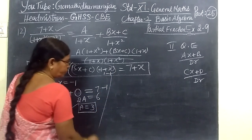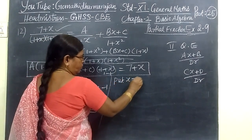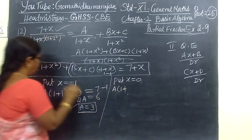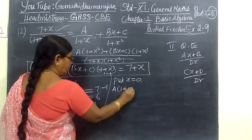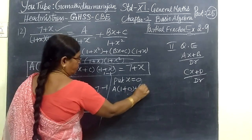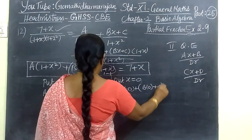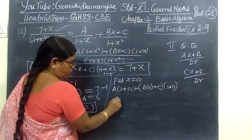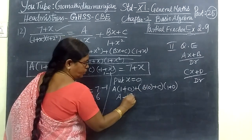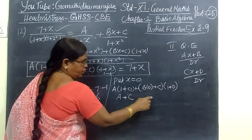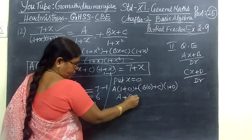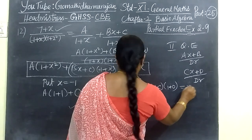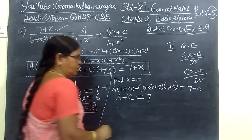Next, put x equal to 0. A bracket 1 plus x squared, here x equal to 0, plus B into 0 plus C, then 1 plus 0. So here A, this will be 0, plus C, 1 plus 0, 1 into something same. So this is equal to 7 plus 0, equal to 7.